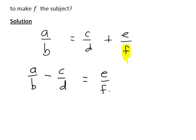Now at this point, because f is what we're wanting to find, we just have a single term involving f on the right, but it can be convenient at this stage just to swap the left-hand side and right-hand side. So we'll just rewrite that simply as e divided by f equals a divided by b minus c divided by d.